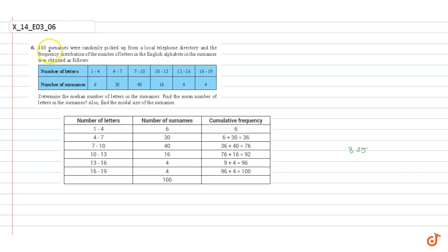In this question, we are given 100 surnames randomly picked up from a telephone directory and the frequency distribution of the number of letters in the English alphabet in the surnames. We have to determine the median number of letters in the surnames, the mean number of letters, and the modal size of the surnames. First, let us find the median number of letters.